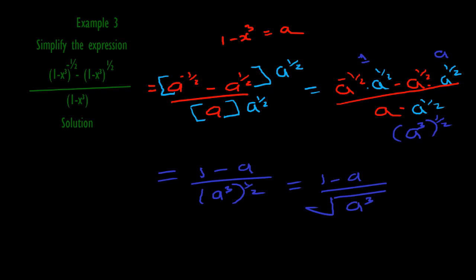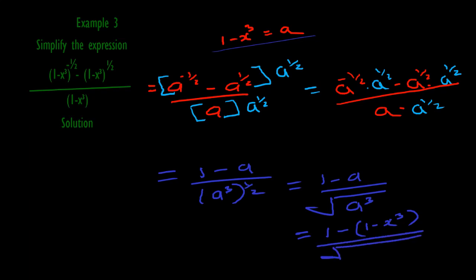To get the simplified form of the expression, we now substitute back the value of a. Remember, a was one minus x cubed. So wherever there is a, we put the value of a in brackets. In the numerator, substitute one minus x cubed. In the denominator, we have the square root of the value of a — which is one minus x cubed — all raised to power three.